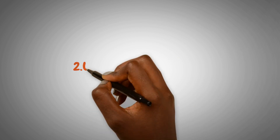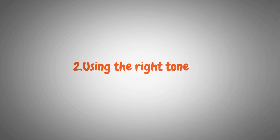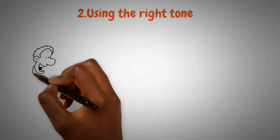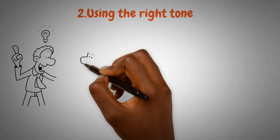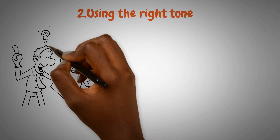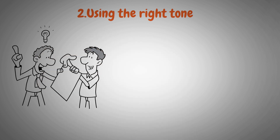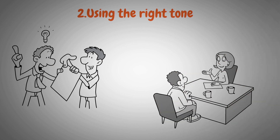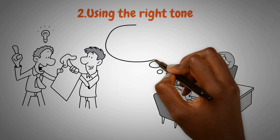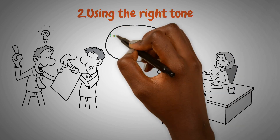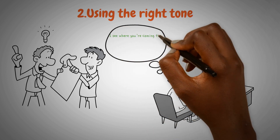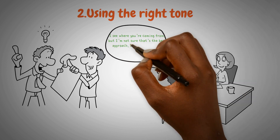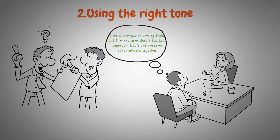The second technique is Using the Right Tone. Tone has a big impact on how someone perceives you, and using a light and encouraging tone can help put the other person at ease. For example, if someone makes a suggestion you don't agree with, you might say, 'I see where you're coming from, but I'm not sure that's the best approach. Let's explore some other options together.'